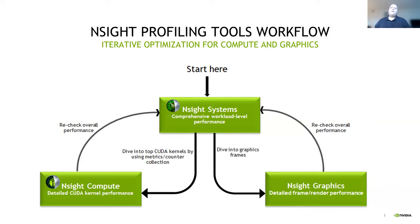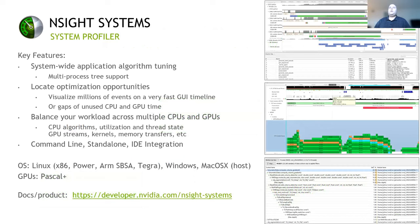Once a particular kernel has been identified as the bottleneck in your application, Nsight Compute allows you to analyze in detail the performance of that kernel. Nsight Systems is our system-level and application-level profiler. It shows you all of the threads and processes profiled during the application, and what they're doing on both the GPU and the CPU.